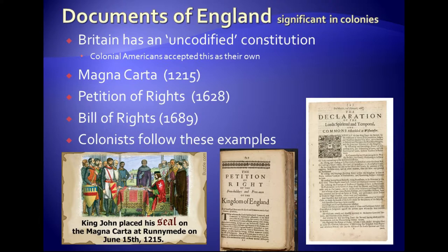In 1215, King John had gained the position of king, but the barons — the landowners — came to him and said: if you want us to be loyal to you and maintain your position as king, you've got to sign this document guaranteeing that you will protect our rights and liberties. So the barons wrote up a document called the Magna Carta, and King John was forced to sign it in 1215.